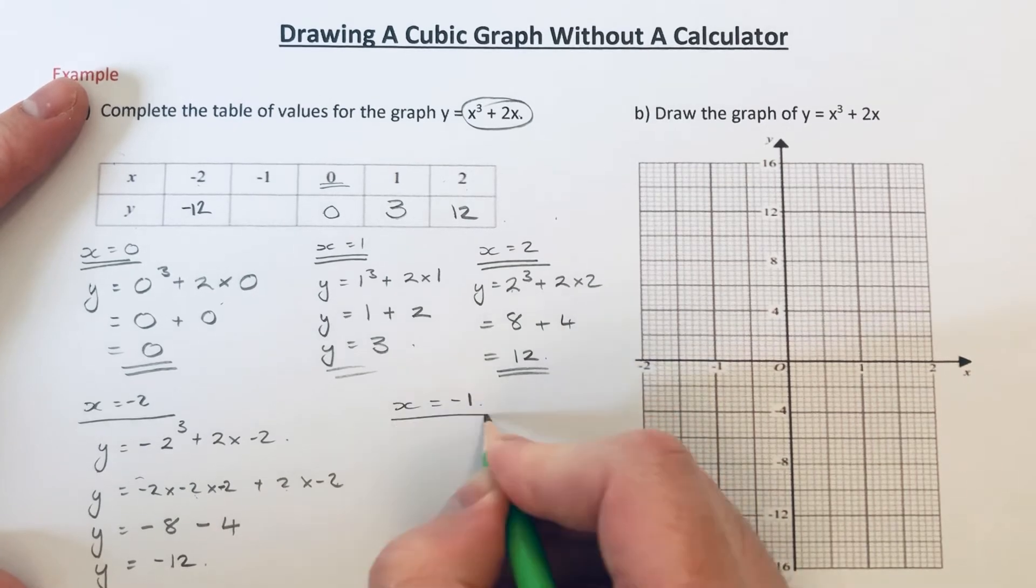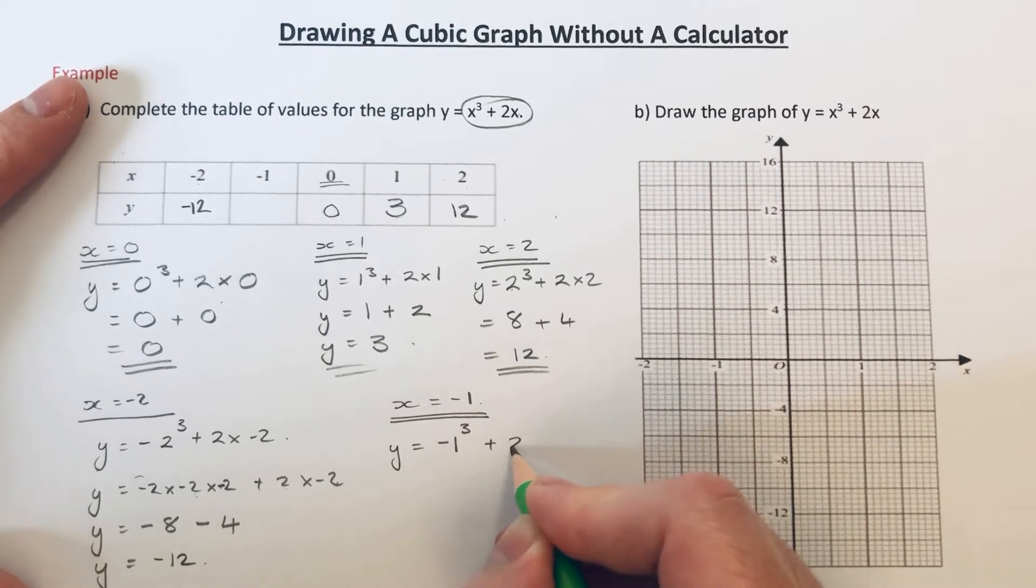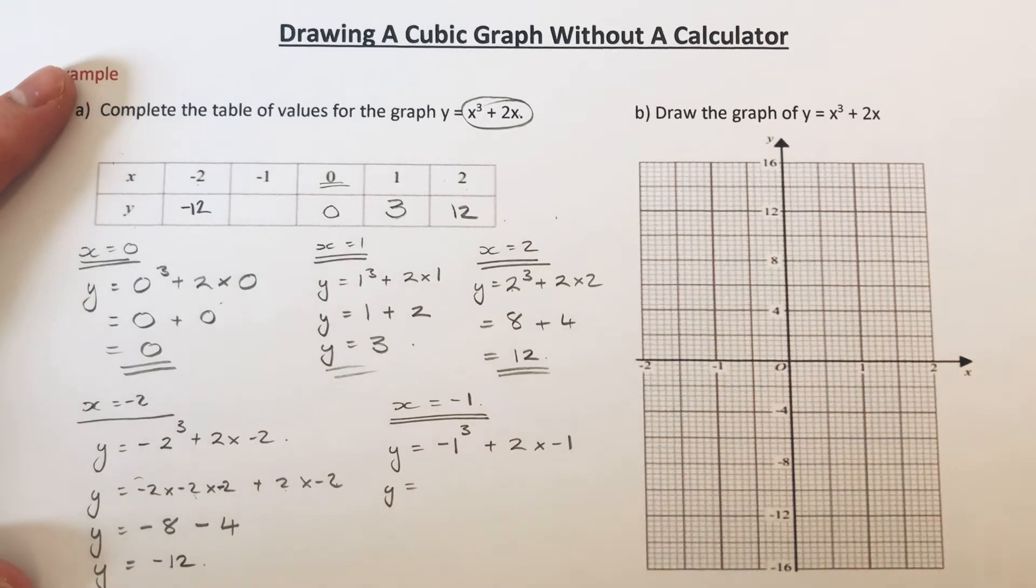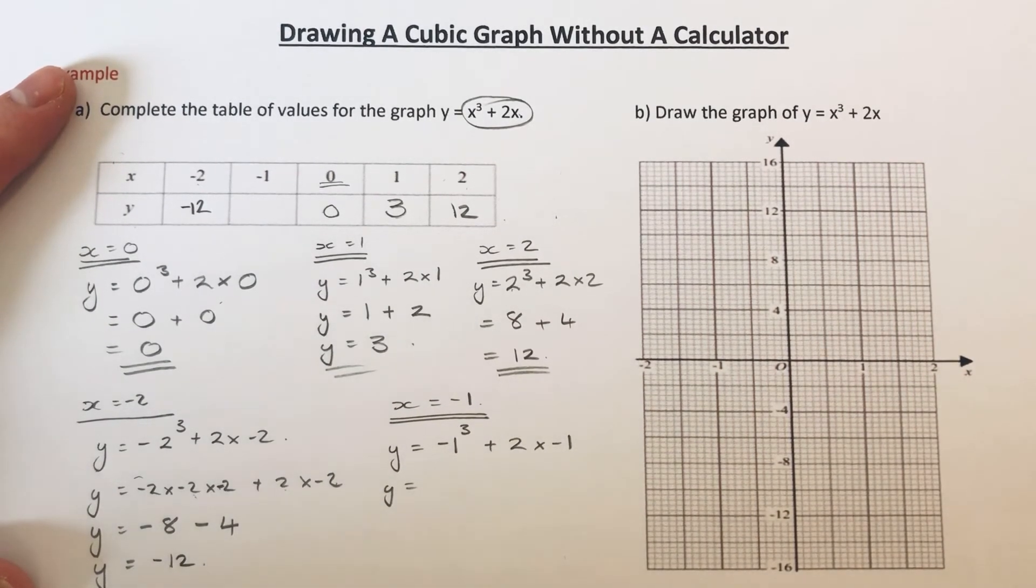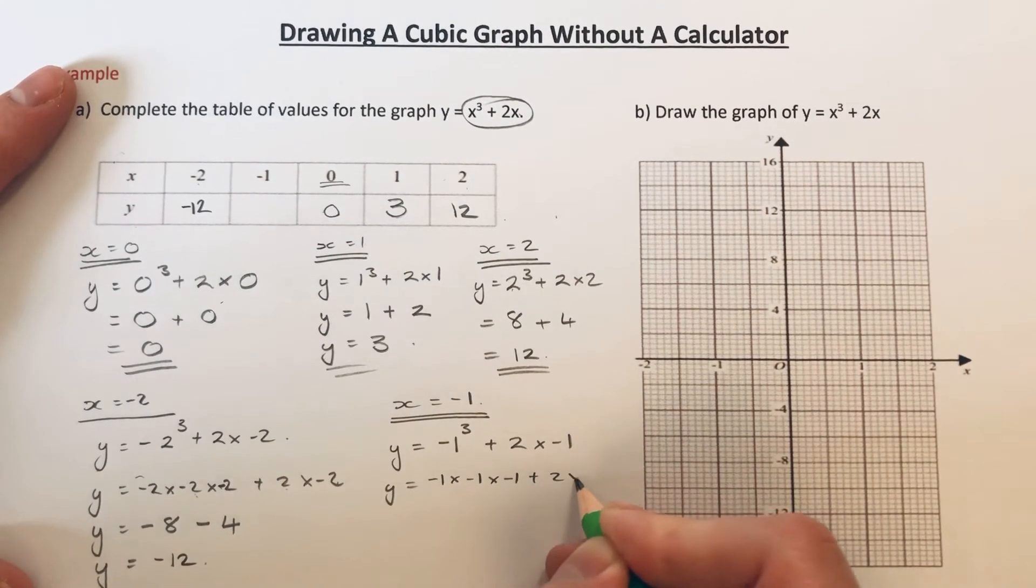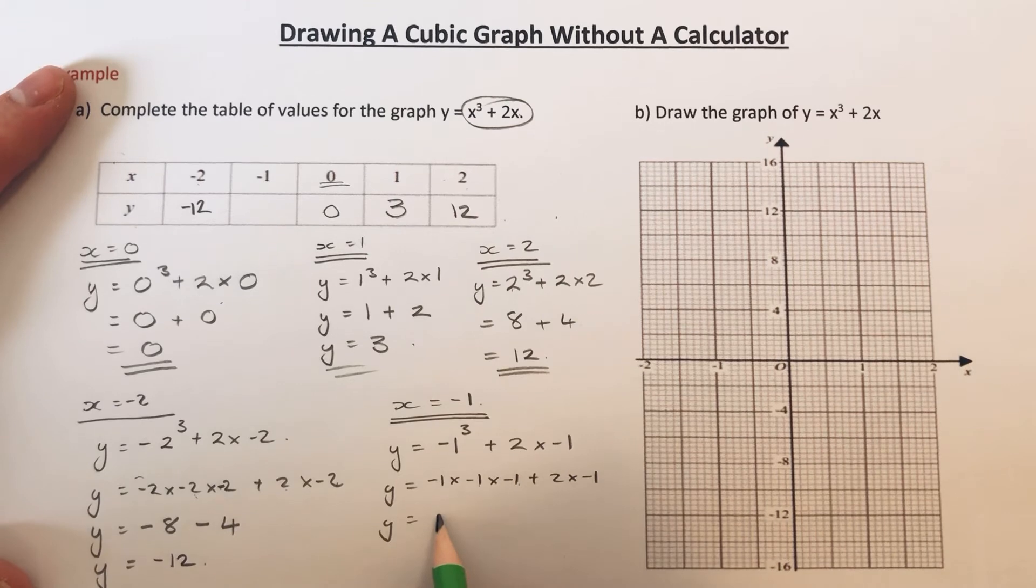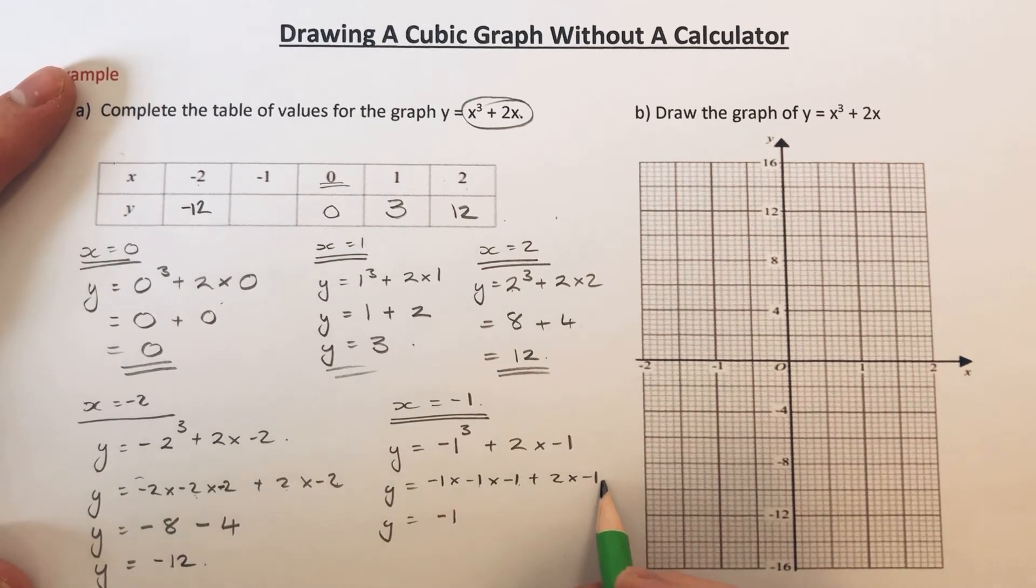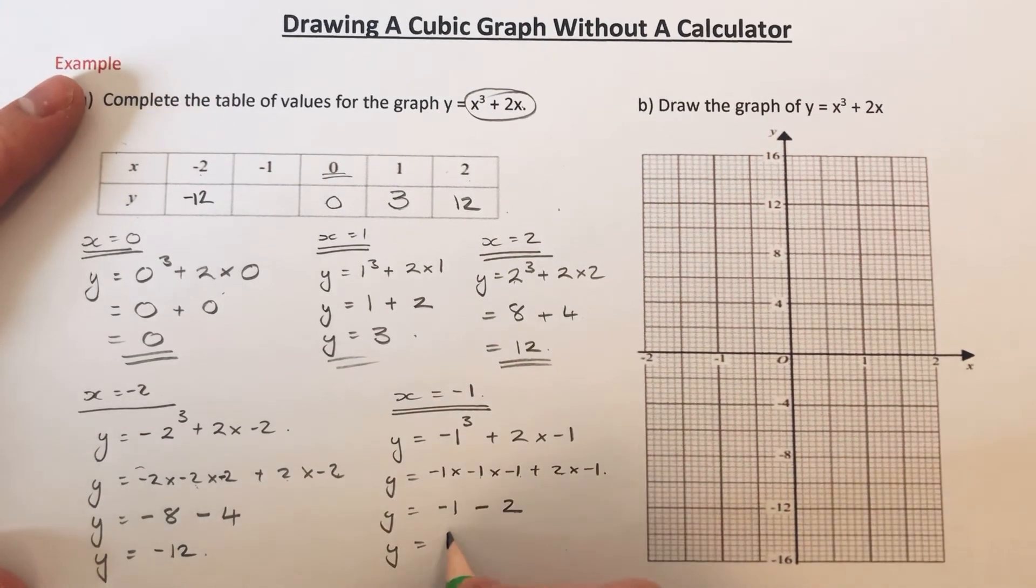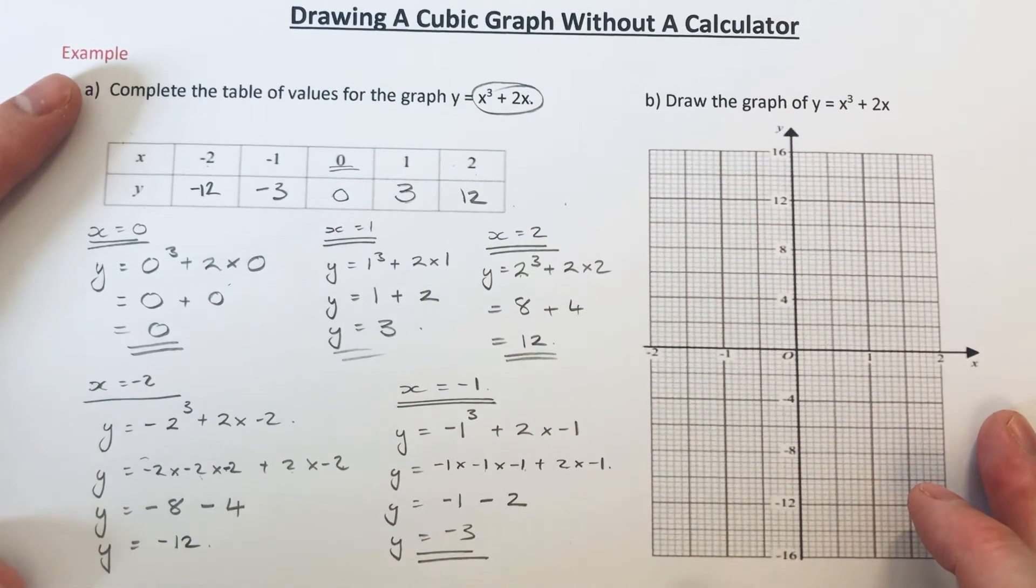And then finally, let's do x equals minus 1. So if we substitute this in, it'd be minus 1 cubed plus 2 times minus 1. So minus 1 cubed is minus 1 times minus 1 times minus 1. So let's write this down. So minus 1 times minus 1 gives us negative 1. 2 times minus 1 is minus 2. Minus 1 times 2 is minus 3. So there's our table of values complete.